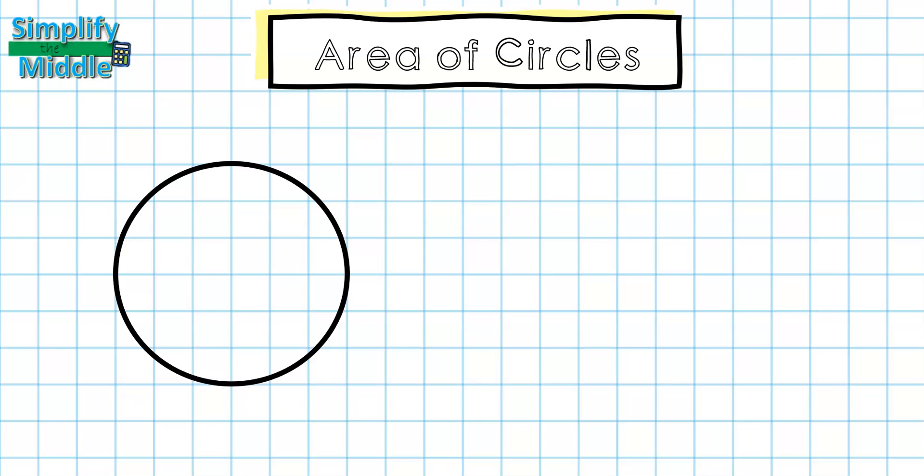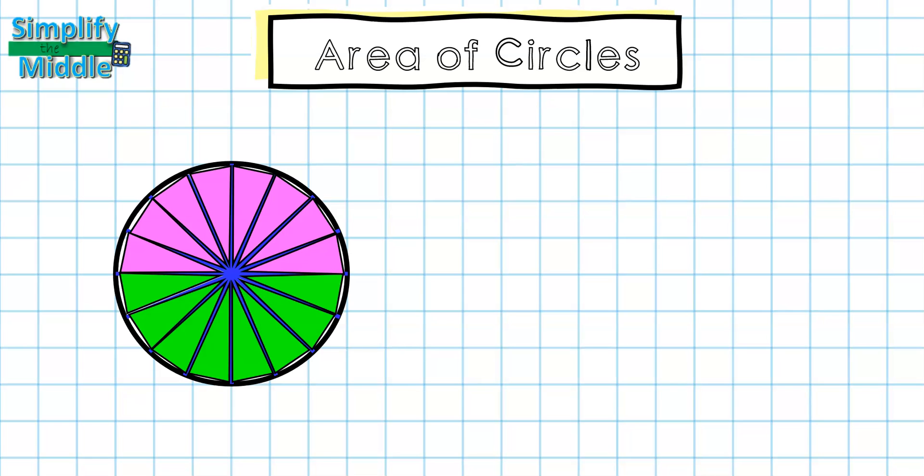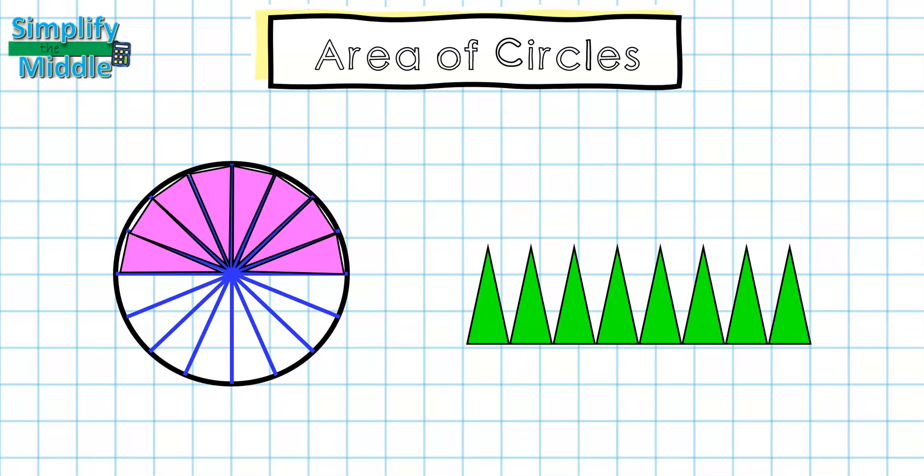Let's start by cutting up our circle into equal pieces. Each of these pieces is called a sector, and I'm going to place a triangle inside each one to represent this amount of space or area. I'm going to pull out the bottom half of my circle and align them into a straight line here.